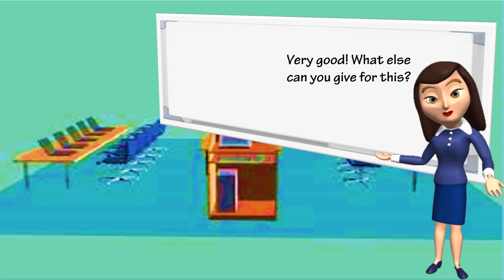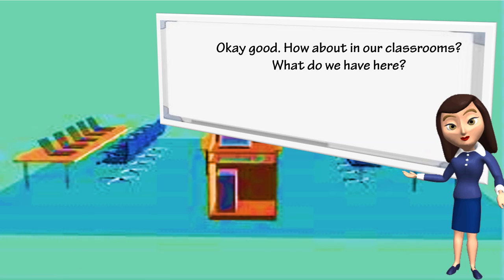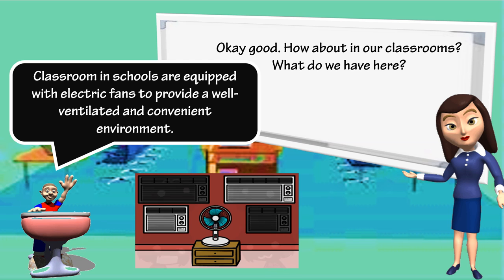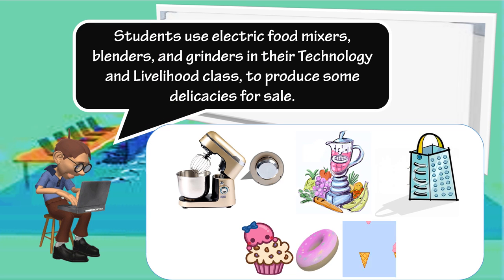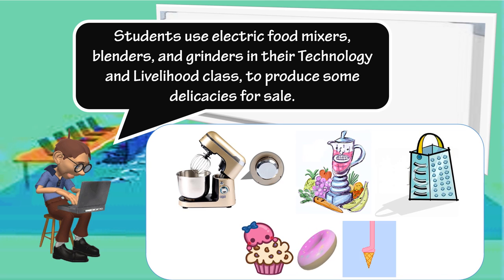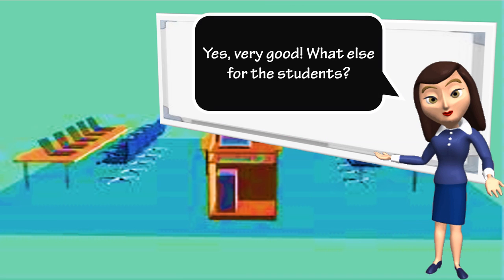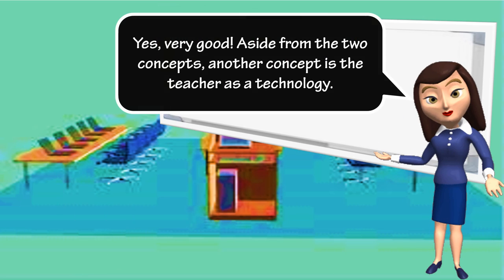A student uses a hairdryer to facilitate styling a newly shampooed hair before coming to class. Classrooms and schools are equipped with electric fans to provide a well-ventilated and convenient environment. Students use electric food mixers, blenders, and grinders in their technology and livelihood class to produce some delicacies for sale. Production becomes fast and efficient and the entrepreneurial activity resulting from the product results in fast production, efficient time management, and gainful profit yield. Student gatherings are made more memorable and happier with the use of music players, amplifiers, digital cameras, televisions, and microphones.